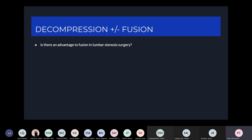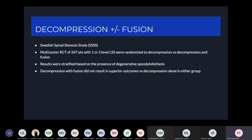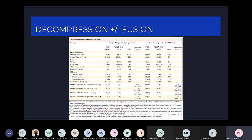The other main question is whether there's an advantage to fusion in addition to decompression for lumbar stenosis. A randomized controlled trial from the Swedish Spinal Stenosis Study looked at 247 patients with one or two levels of stenosis, randomized to decompression or decompression and fusion, with results stratified by presence of spondylolisthesis. The addition of fusion did not result in any superior outcomes versus decompression alone, whether or not there was a degenerative spondylolisthesis.